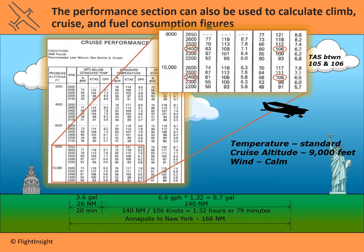Adding it all together: total fuel is 3.6 gallons for the climb plus 8.7 gallons for cruise, giving 12.3 gallons needed for the trip. Total time is 20 minutes for the climb plus 79 minutes for cruise, equaling 99 minutes — just over an hour and a half from Annapolis to New York. Not bad — definitely beats the Jersey Turnpike.